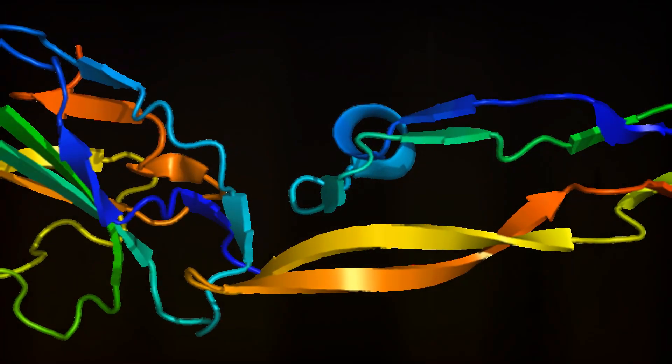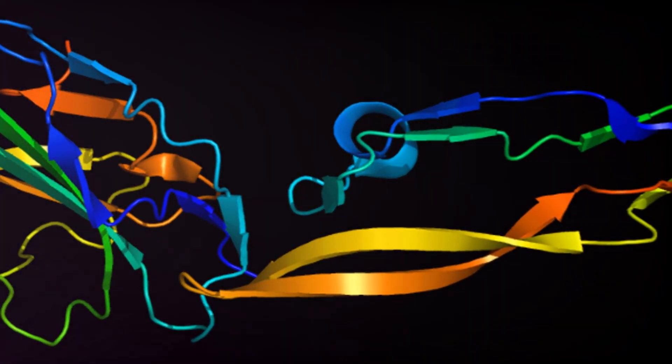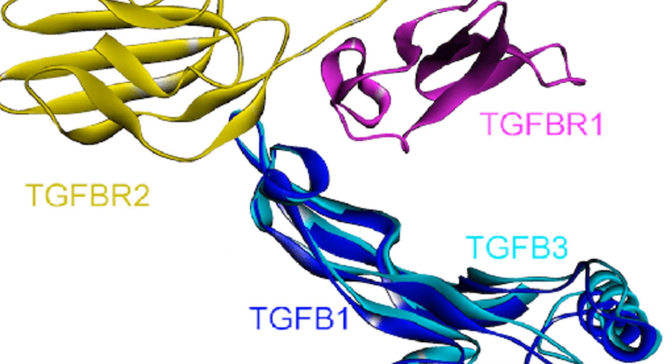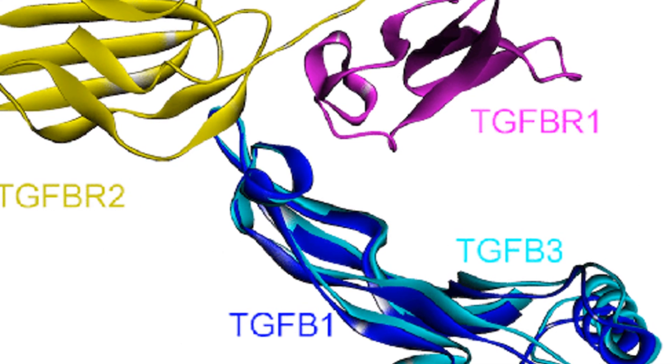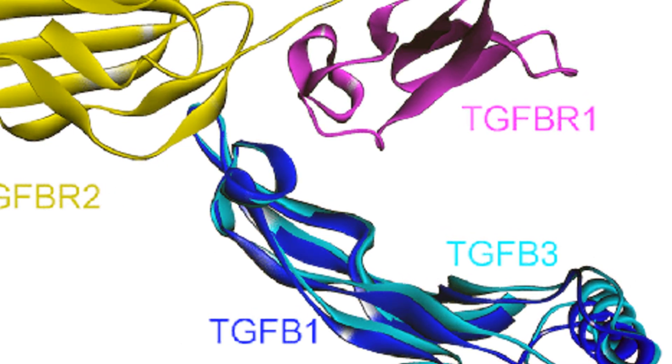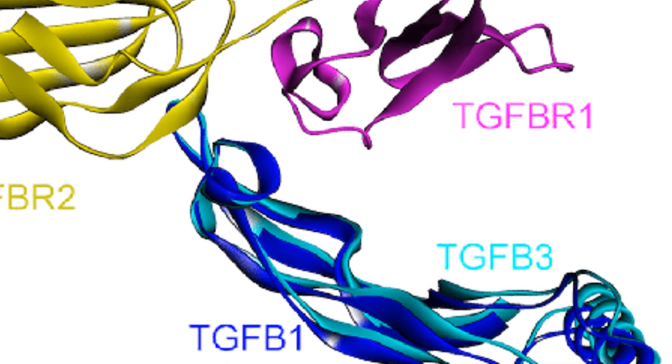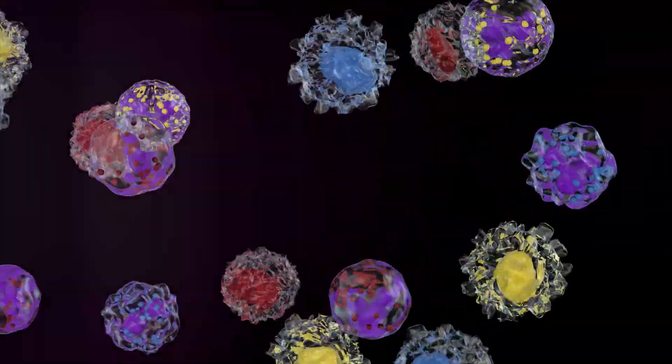The TGF-β3 protein is composed of a signal peptide, a pro-peptide region, and a mature peptide. The mature TGF-β3 peptide forms a dimer that binds to its receptors, initiating intracellular signaling pathways.